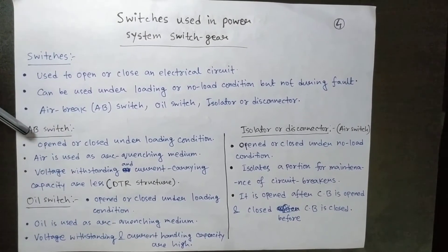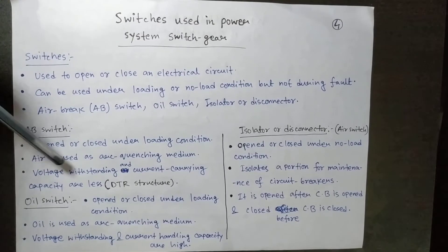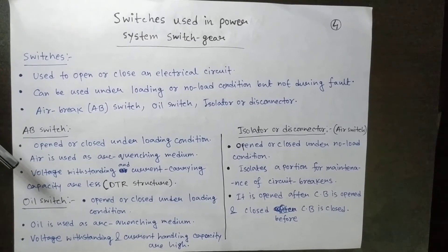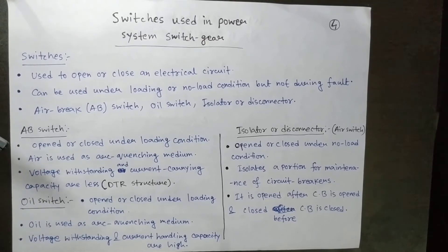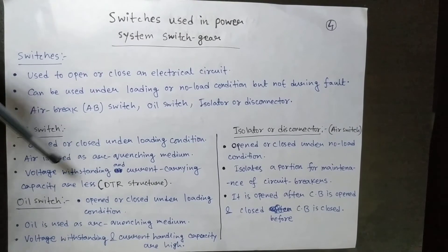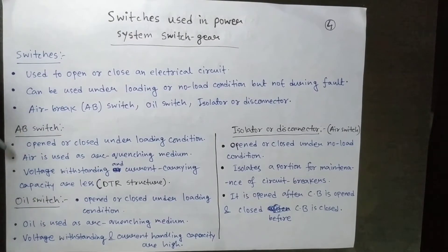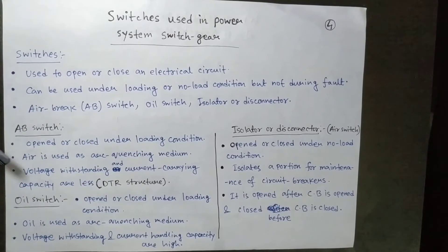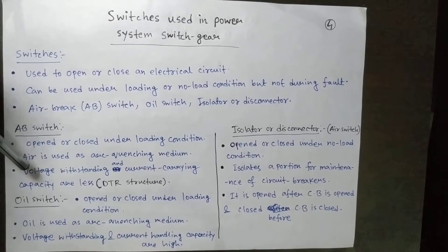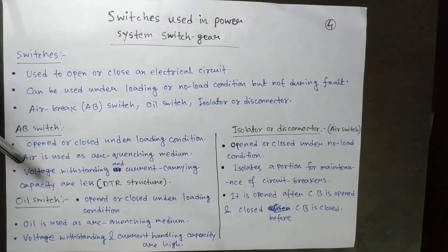The air brake switch, or AV switch, is opened or closed under loading condition. Air is used as the arc quenching medium. Although it operates under normal full load or half load conditions, arc phenomena may still occur during the opening of the switch, and air is used to quench that arc — that is why it is called an air brake switch. The voltage withstanding and current carrying capacity are relatively less because air is used as the arc quenching medium, which carries an insulation risk at higher values.